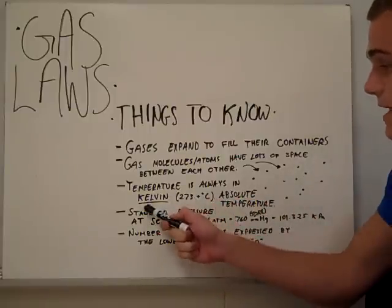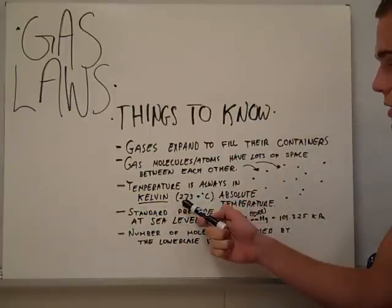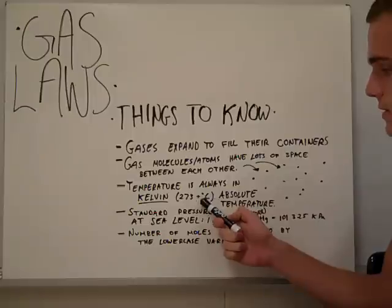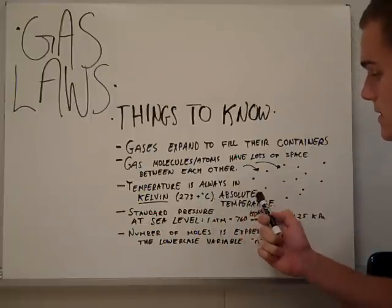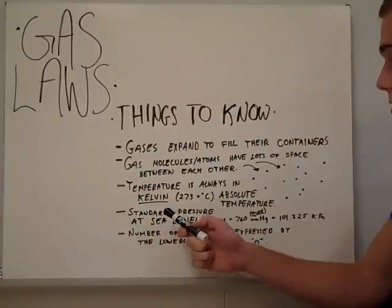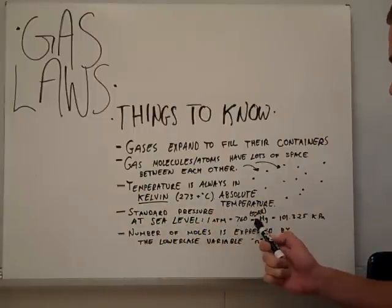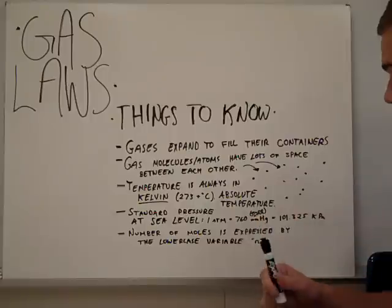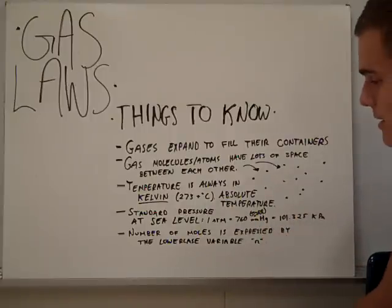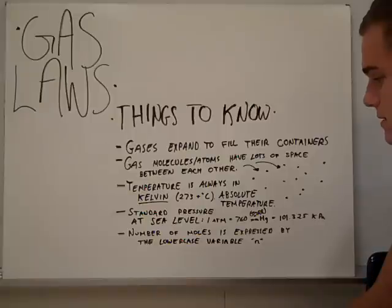Temperature is always in Kelvin. This is 273 degrees Kelvin added to the degrees Celsius, and that gives us absolute temperature. Standard pressure at sea level is one atmosphere, 760 millimeters mercury or torr, and 101.325 kilopascals. The number of moles is expressed by the lowercase variable n.